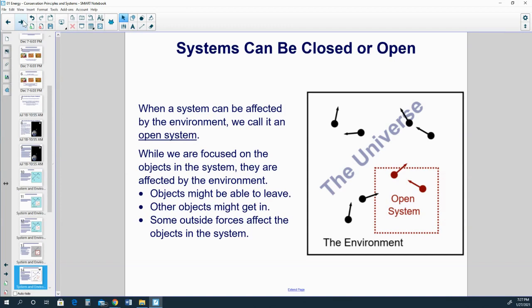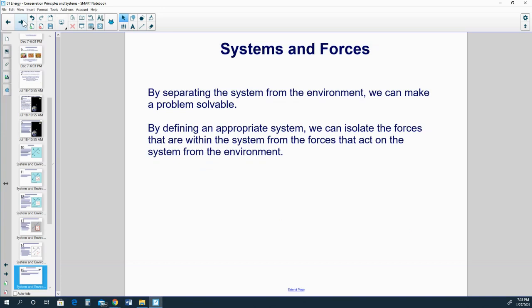When a system can be affected by the environment, we call it an open system. While we are focused on the objects in the system, they are affected by the environment. Objects might be able to leave, other objects might get in, and some outside forces affect the objects in the system.